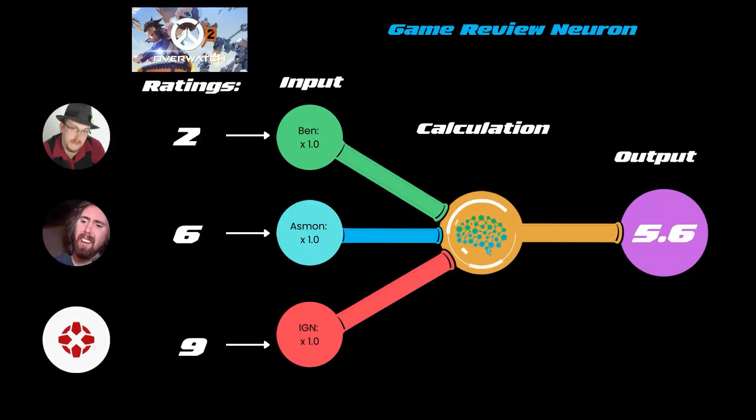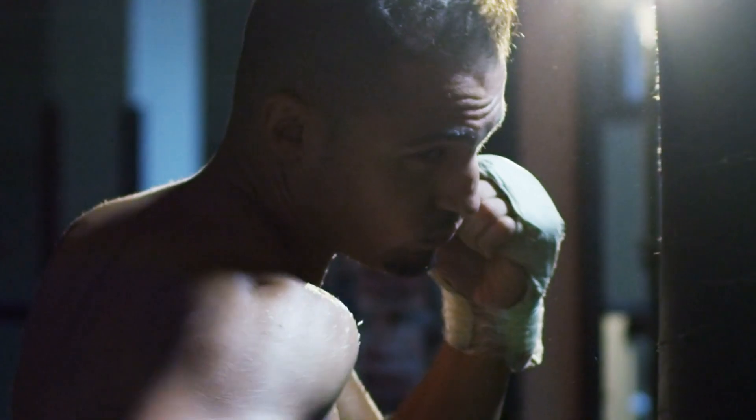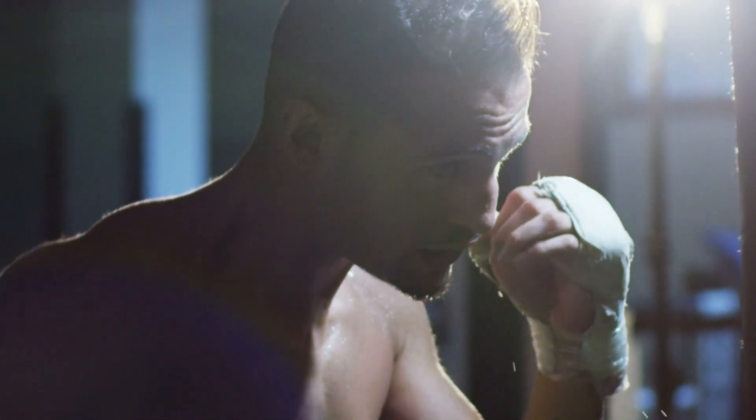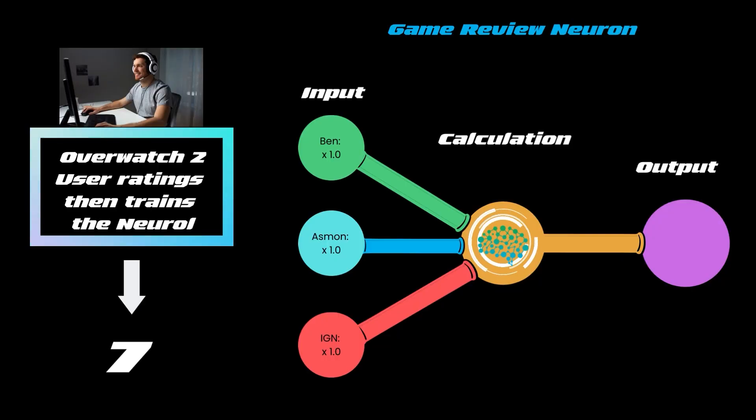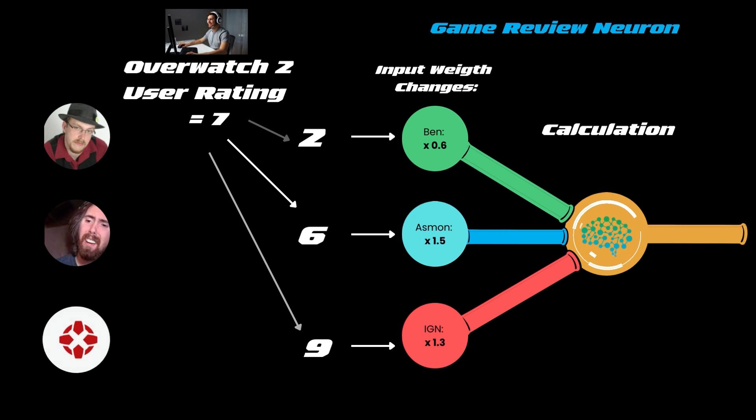Now we want users who have played the game to also give it a rating. Then we're going to use the users' rating to train the neuron. As we can see, the user's average rating of the game Overwatch 2 was a 7. Then we just take the user's rating and look at what the critics gave the game. We can see that since Ben gave it a 2, that's quite far off from the 7, and Asmongold was the closest with a 6, and IGN was also very close with a game rating of 9.